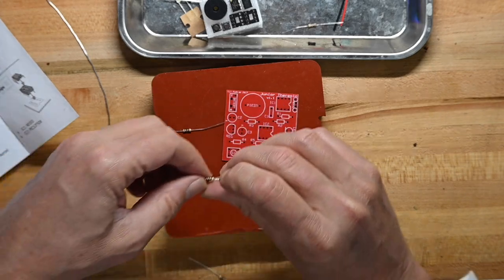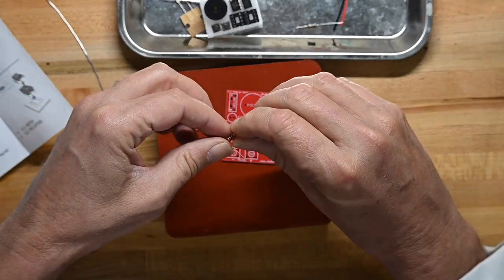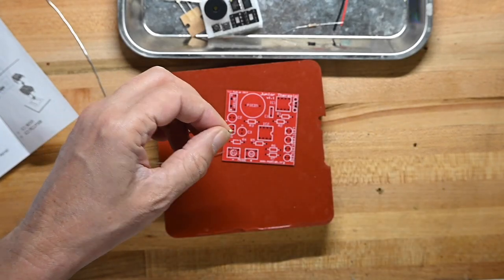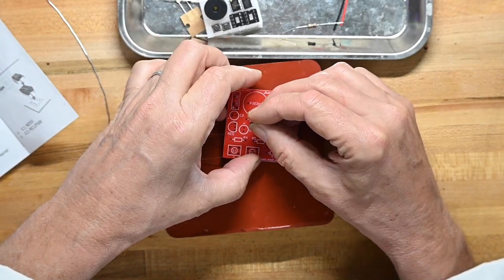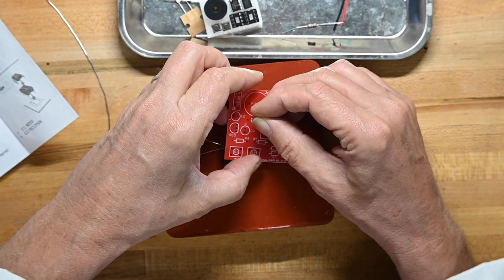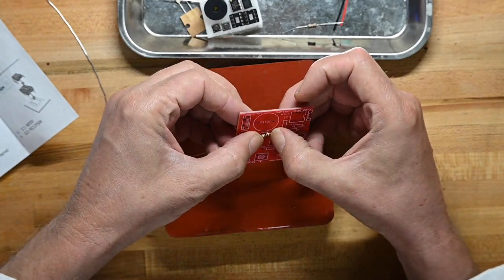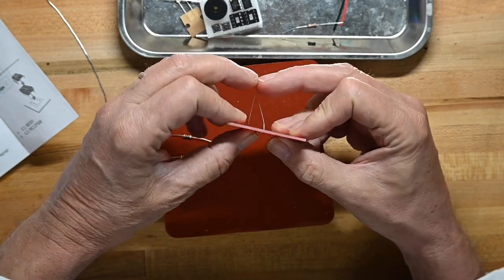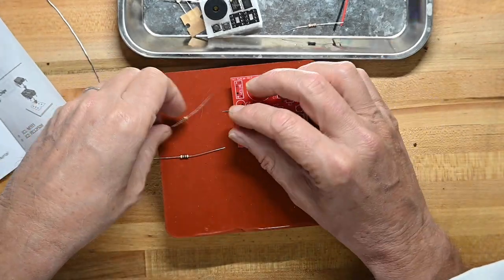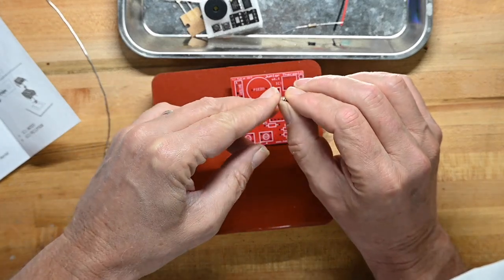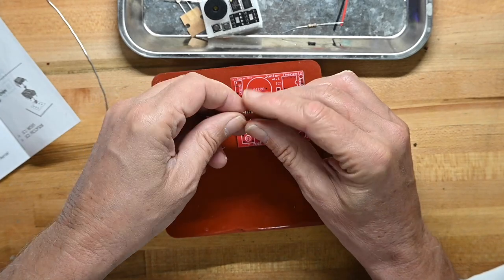So what we do when we get a new kit from a manufacturer we may not know. We want to know how close to the body of the resistor we want to bend the leads. Sometimes you have to bend them real close. Sometimes, like in this case, you want to give about a millimeter and a half, two millimeters on either side of the body. So you don't want it right up against the body.